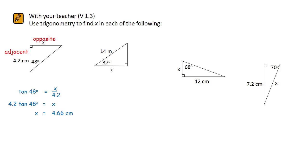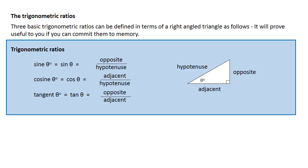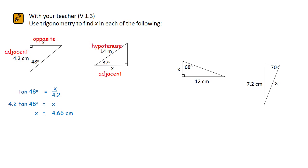In the second question, it's the adjacent and hypotenuse sides which are involved. We find that the cosine ratio connects together adjacent and hypotenuse. Cosine of an angle equals adjacent over hypotenuse. So in this example, the cosine of 37 is equal to x over 14. We shuffle it round to make x the subject by multiplying both sides by 14, and then 14 times the cos of 37 equals 11.18.